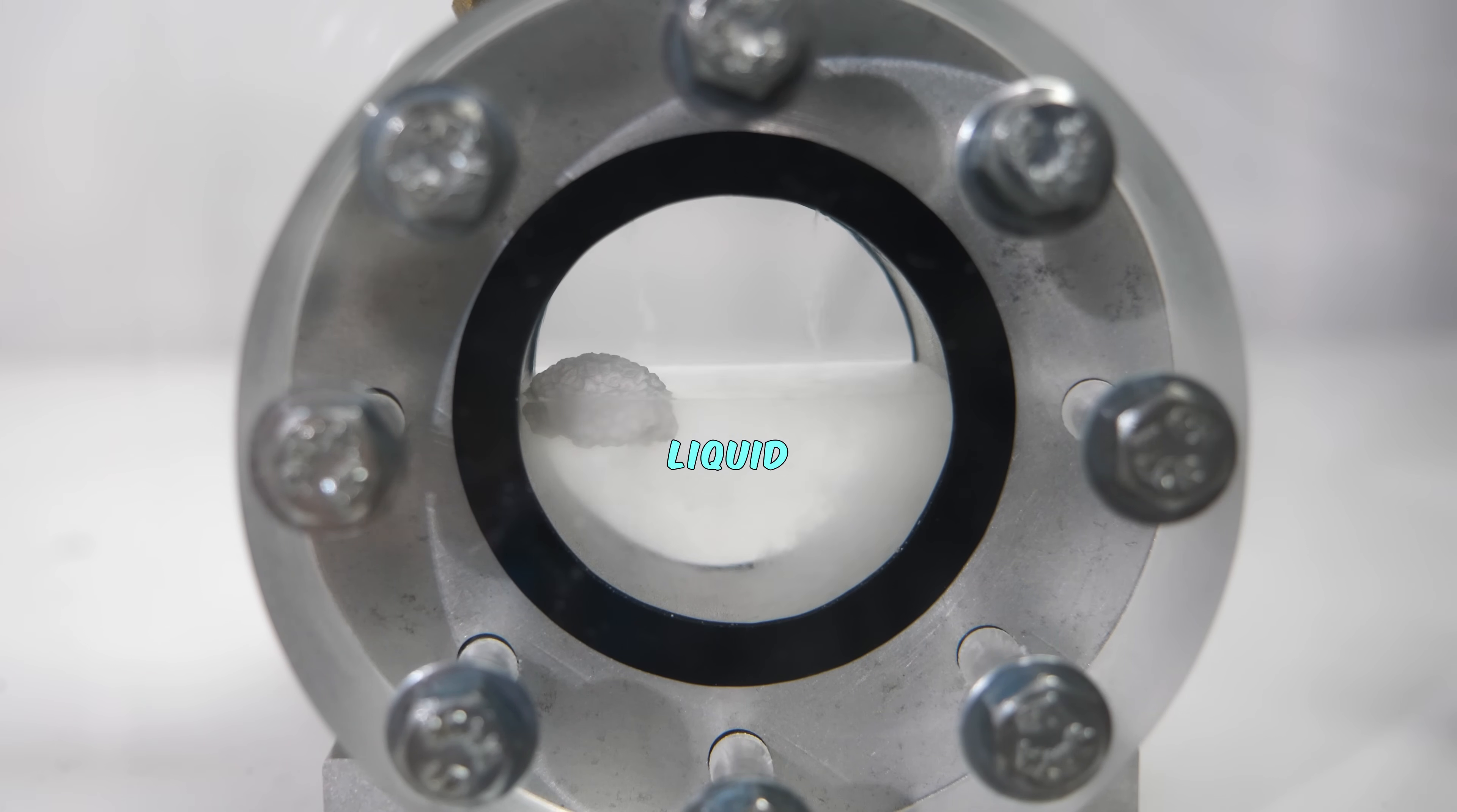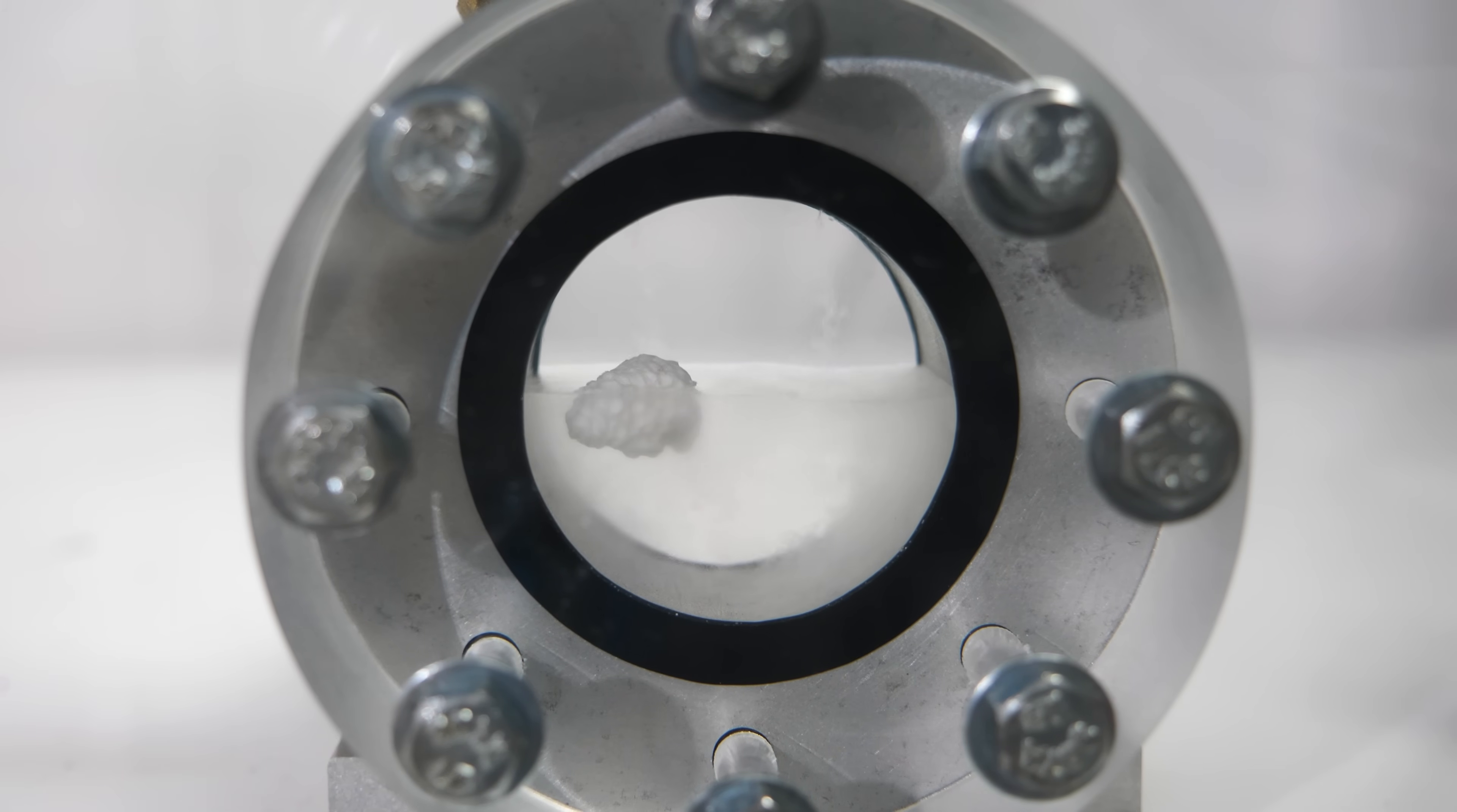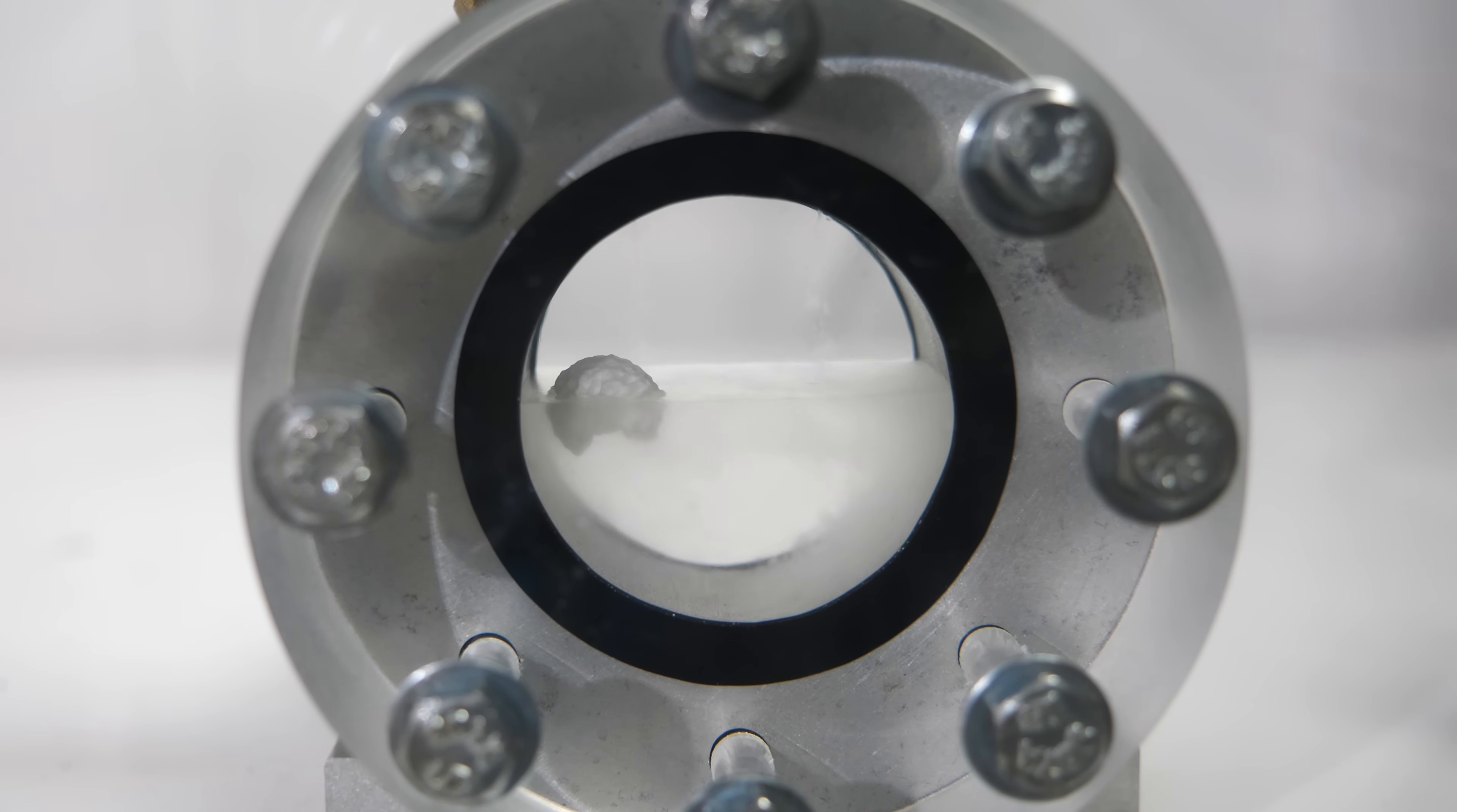So why did this boat sink when it went supercritical? Well, if you think about it, right before it turns supercritical, there's a liquid on bottom and a gas on top. Since the boat is floating right on the surface of the meniscus, that means the average density of the boat is more dense than the gas, but less dense than the liquid.